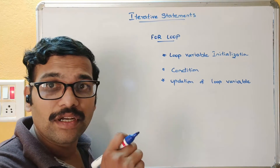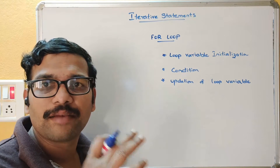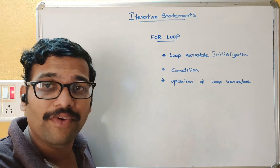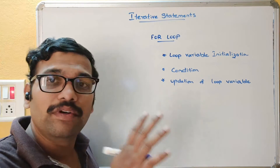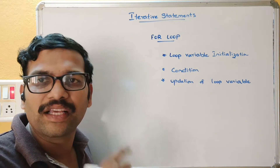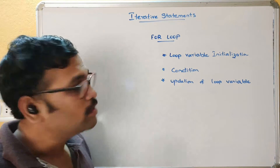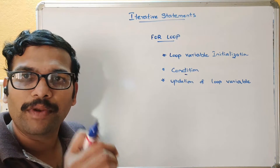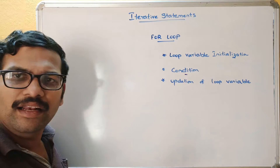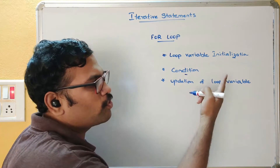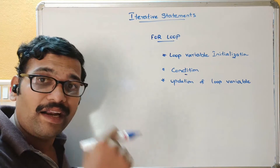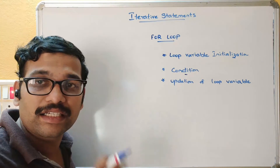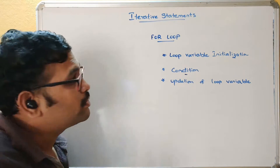Whatever iterative statements we use — for loop, while, or until — we need to write a condition because iterative statements mean repeatedly executing a set of instructions. After a finite number of executions, at one moment we need to terminate the loop, otherwise it will keep executing and become an infinite loop. To terminate the loop we write this condition. We take one loop variable, assign it a value, and in every iteration we update it so it affects the condition. After every iteration we check the condition, and based on it we enter or exit the loop.